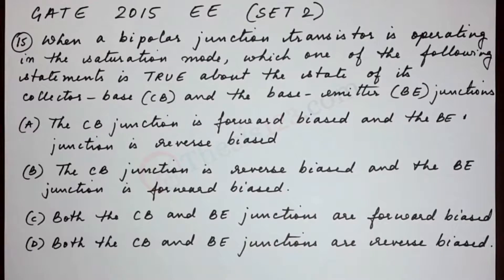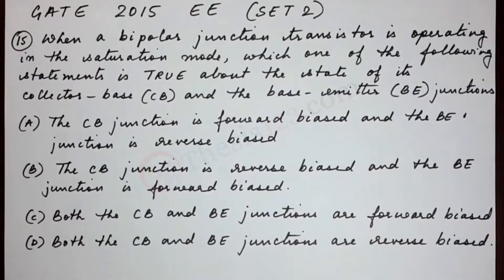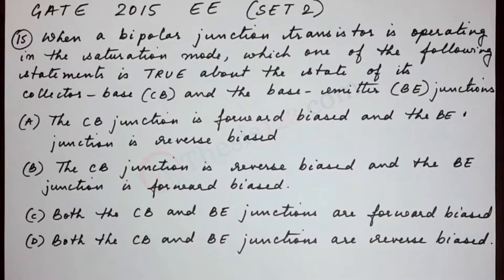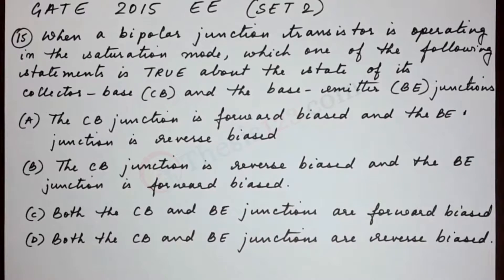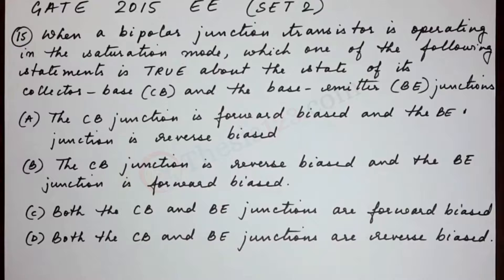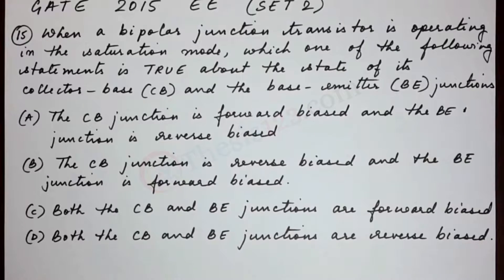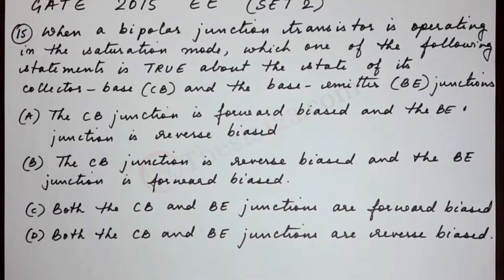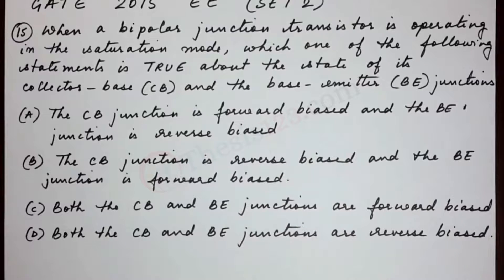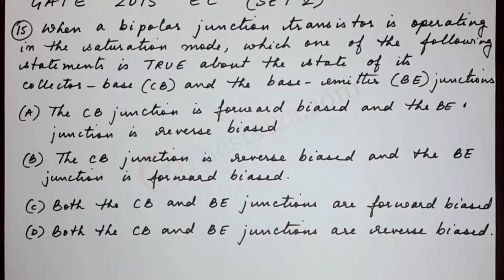Here's the next question, number 15. When a bipolar junction transistor is operating in the saturation mode, which one of the following statements is true about the state of its collector-base (CB) and base-emitter (BE) junctions?